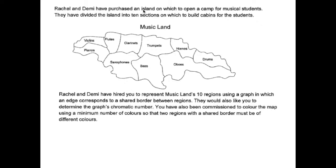Rachel and Demi have purchased an island on which to open a camp for musical students. They have divided the island into 10 sections on which to build cabins for the students. You have the violin section, piano section, flute section,